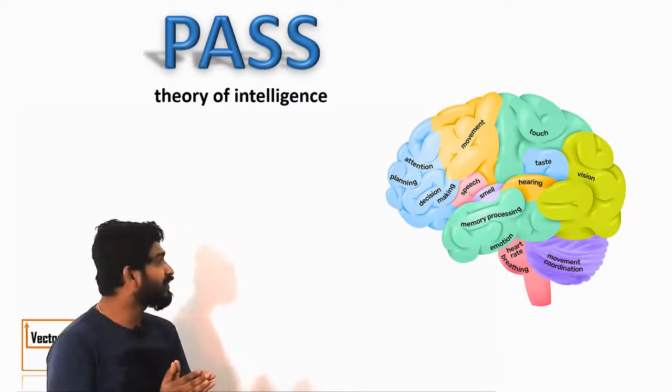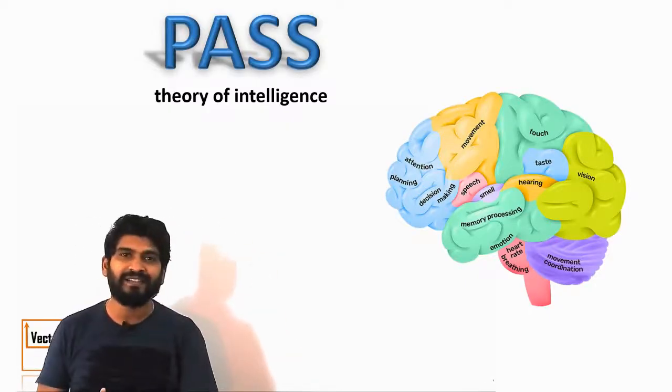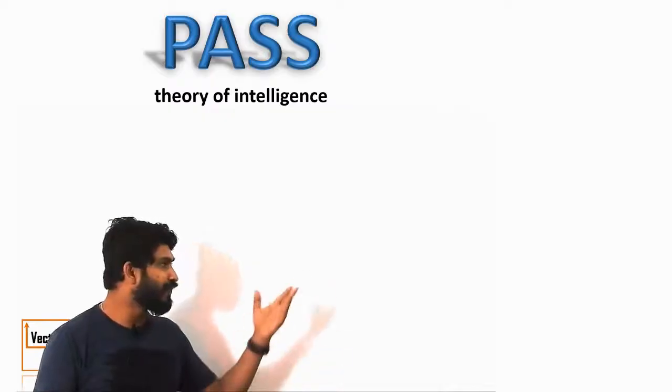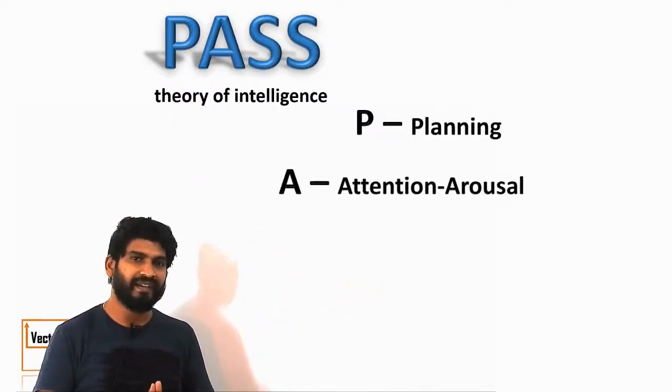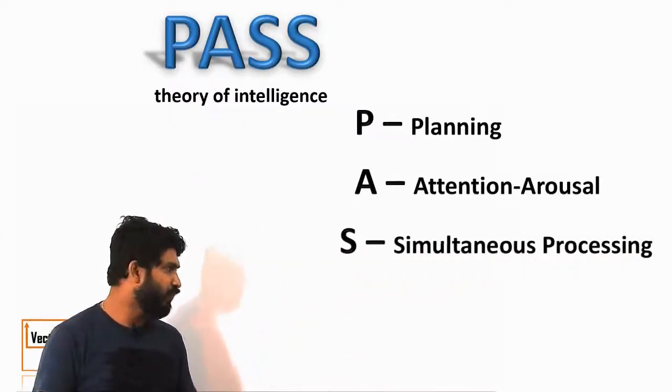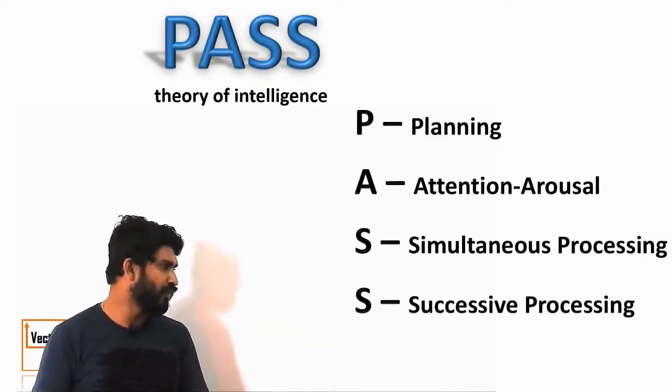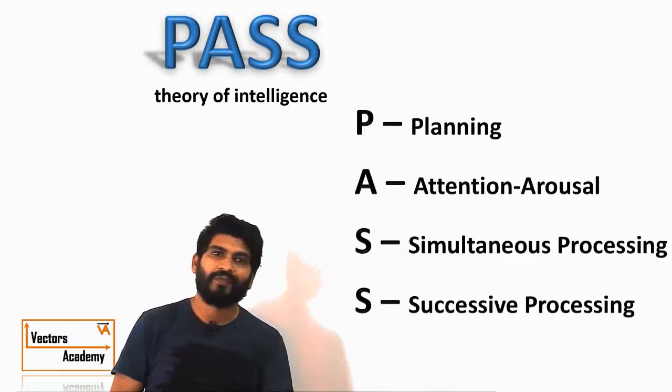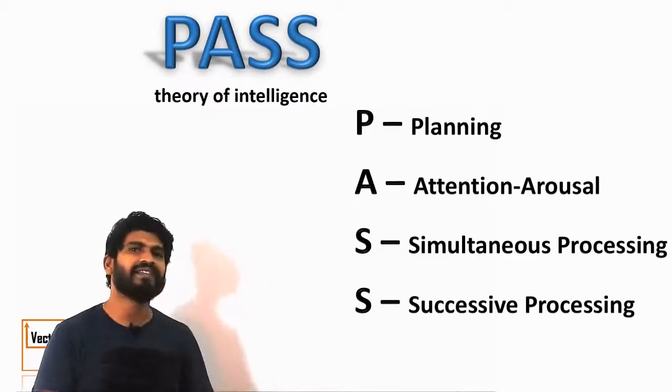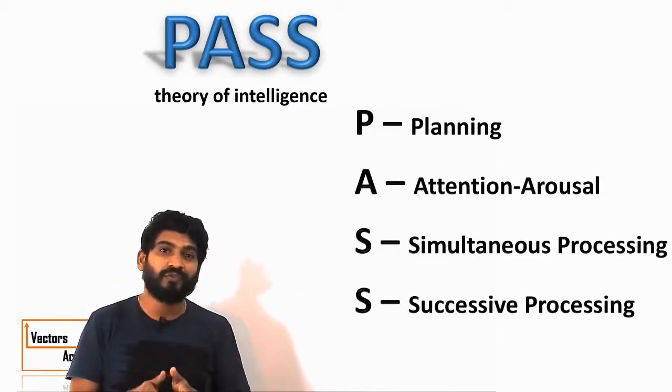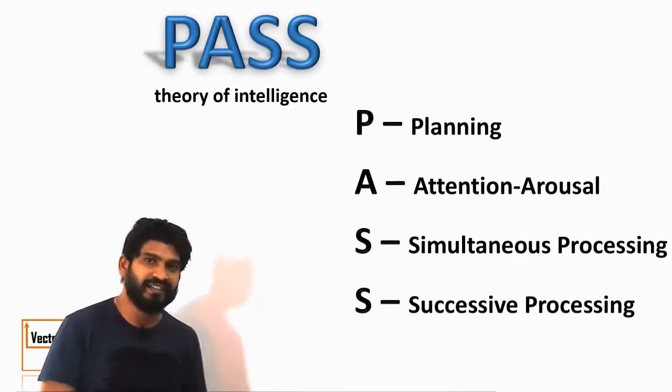Now let us first elaborate this PASS theory. P stands for planning, A stands for attention arousal, S stands for simultaneous processing and last S stands for successive processing. These are the different abilities in which the intelligence was divided according to this theory.